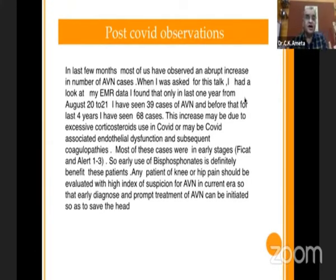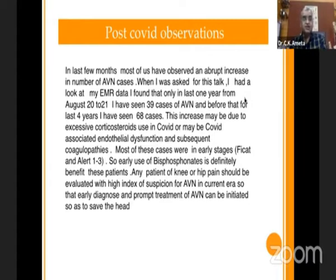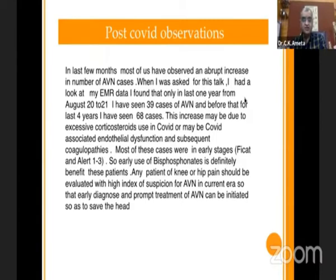In the last few months, most of us have observed an abrupt increase in the number of AVN cases. When preparing this talk, I looked at my AVN data and found that in the last one year alone — from August 2020 to 2021 — I have seen 39 cases of AVN, whereas before that, over the last four years, I had seen 68 cases. This increase may be due to excessive corticosteroid use in COVID, or COVID-associated endothelial dysfunction and subsequent coagulopathies. Most of these cases were in early stage — FICAT 1. So, early use of bisphosphonates in these cases definitely benefits. Any patient with knee or hip pain should be evaluated with a high index of suspicion for AVN in the current era, so that early diagnosis and prompt treatment can be initiated to save the femoral head.